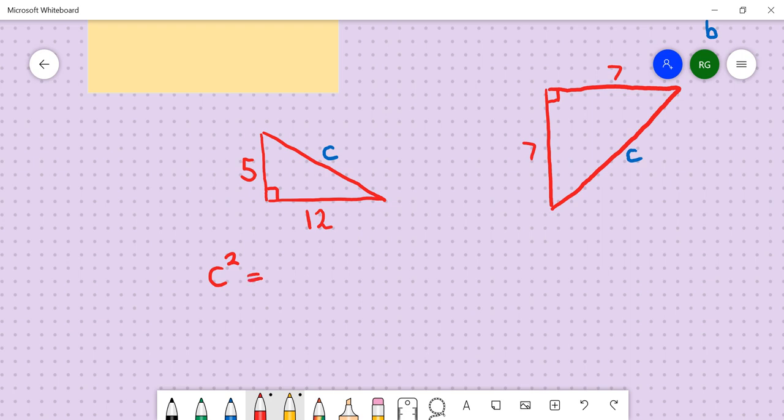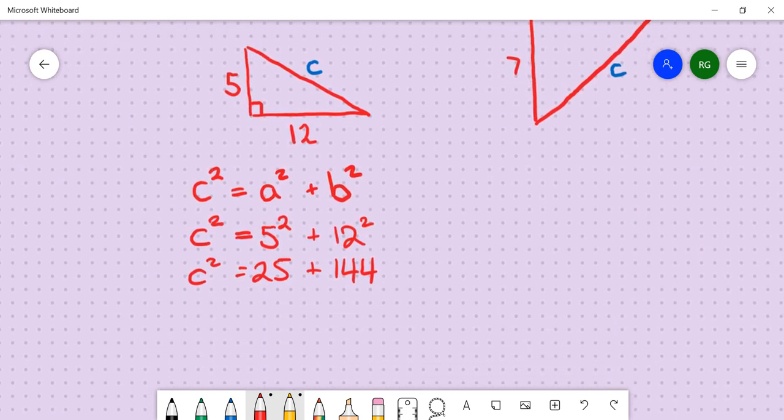c squared, always rewrite the formula, is equal to a squared plus b squared. We don't know c, so it stays as c squared. a we'll say is 5. So it's 5 squared plus 12 squared. c squared equals 25 plus 144.